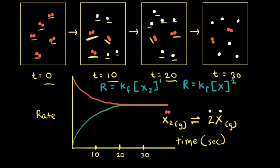The concentration of X2 has decreased — from five particles to three to only two. Looking at the rate law for the forward reaction, the rate is proportional to the concentration of X2. So as [X2] decreases, the rate of the forward reaction also decreases. We can see this on a graph of rate versus time, where the forward reaction rate starts at a certain value and decreases as [X2] drops.